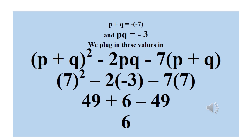So now we plug in the values. We have p plus q squared minus 2pq minus 7 into bracket p plus q. Since p plus q is 7, we write 7 squared. Then minus 2 times pq, and pq is minus 3, so we have minus 2 into bracket minus 3. Then minus 7 times p plus q, which is 7 again.